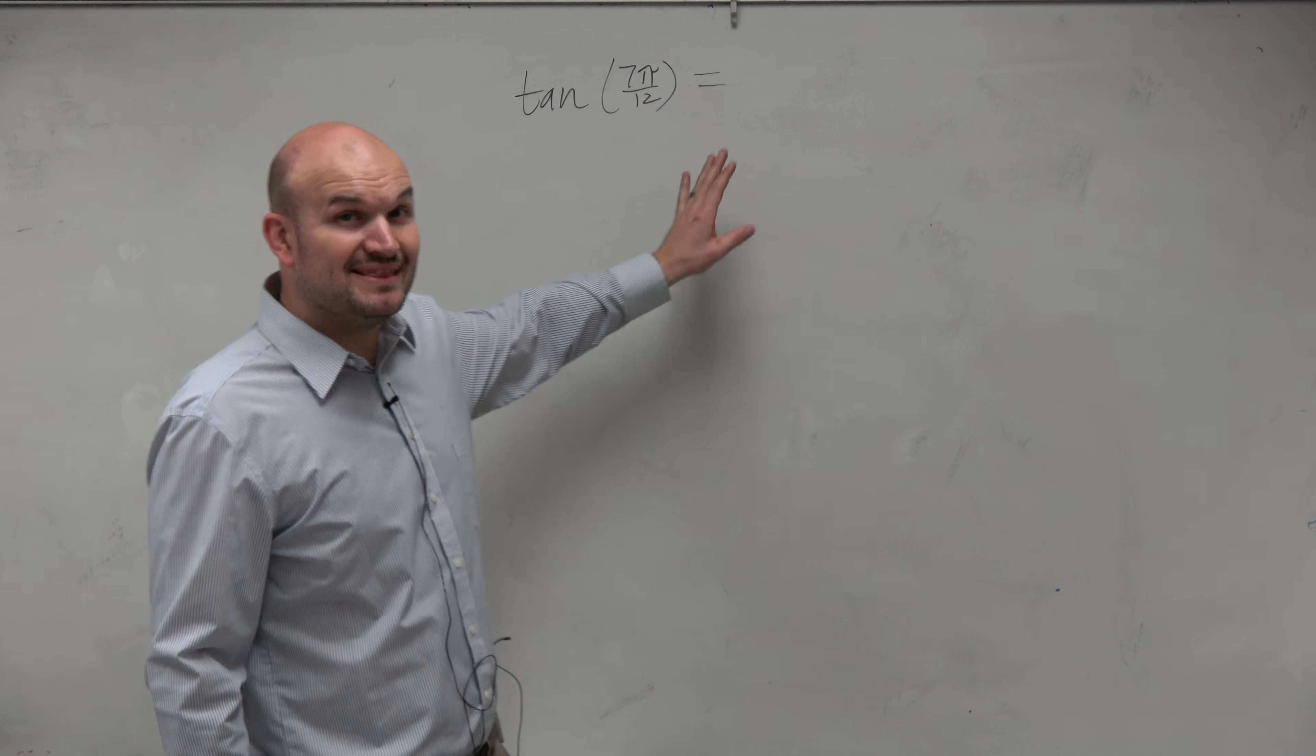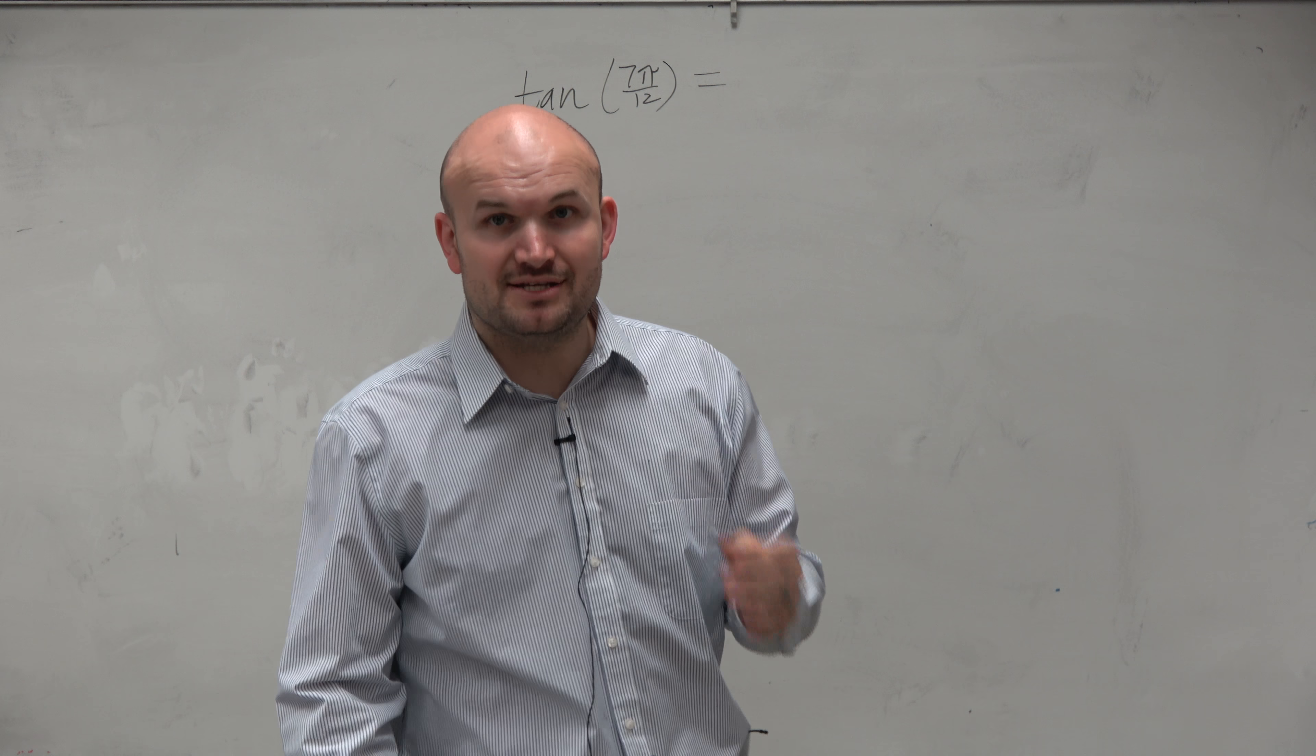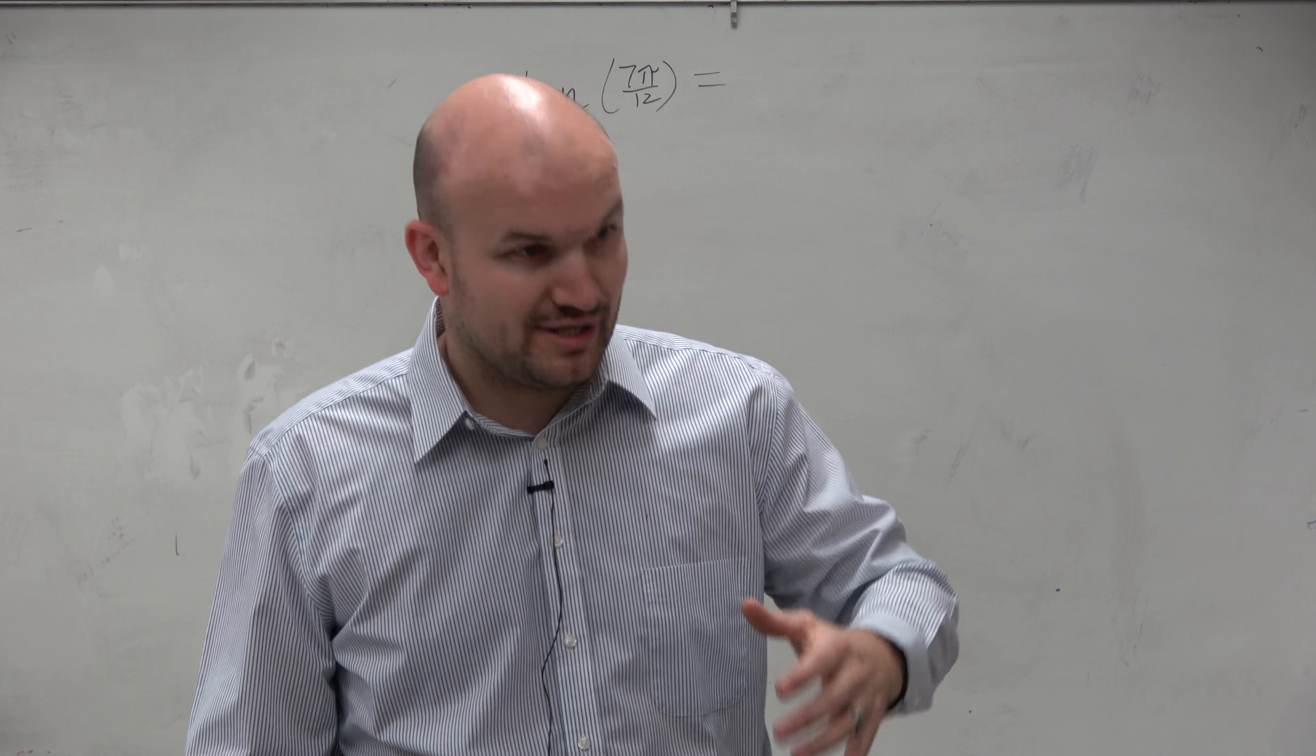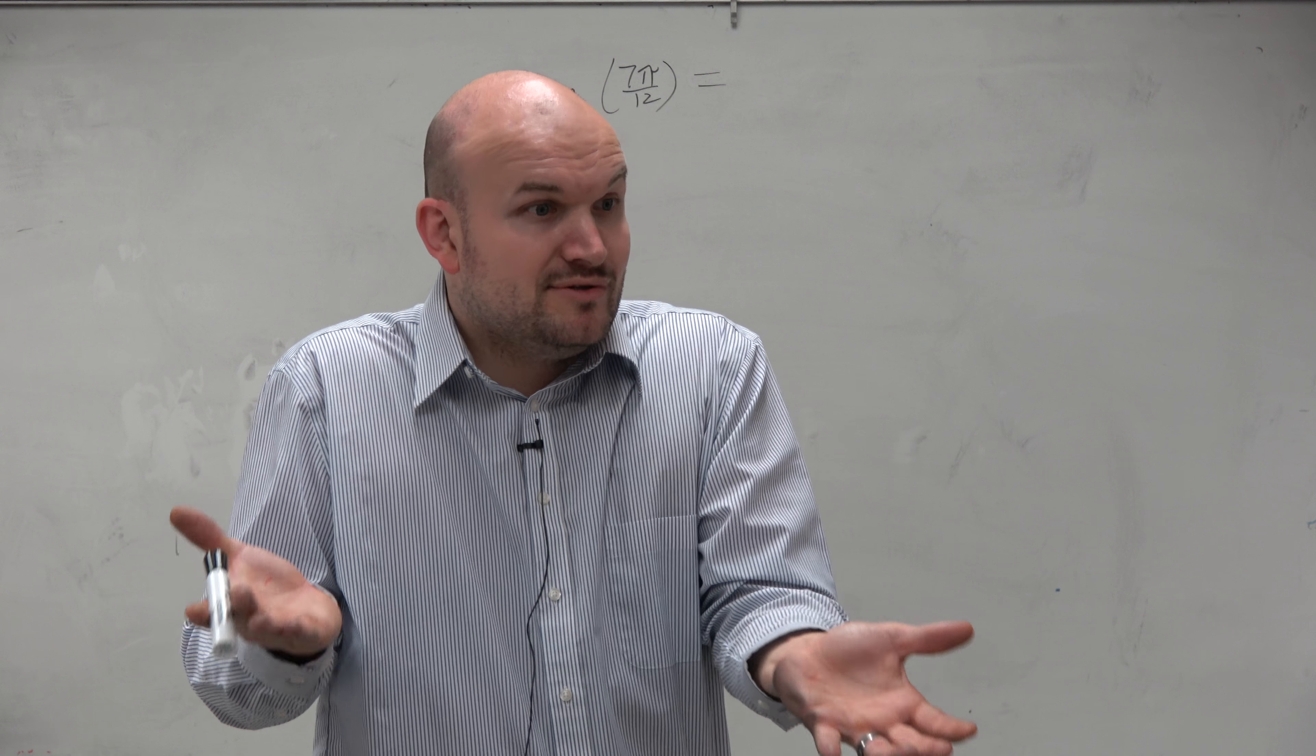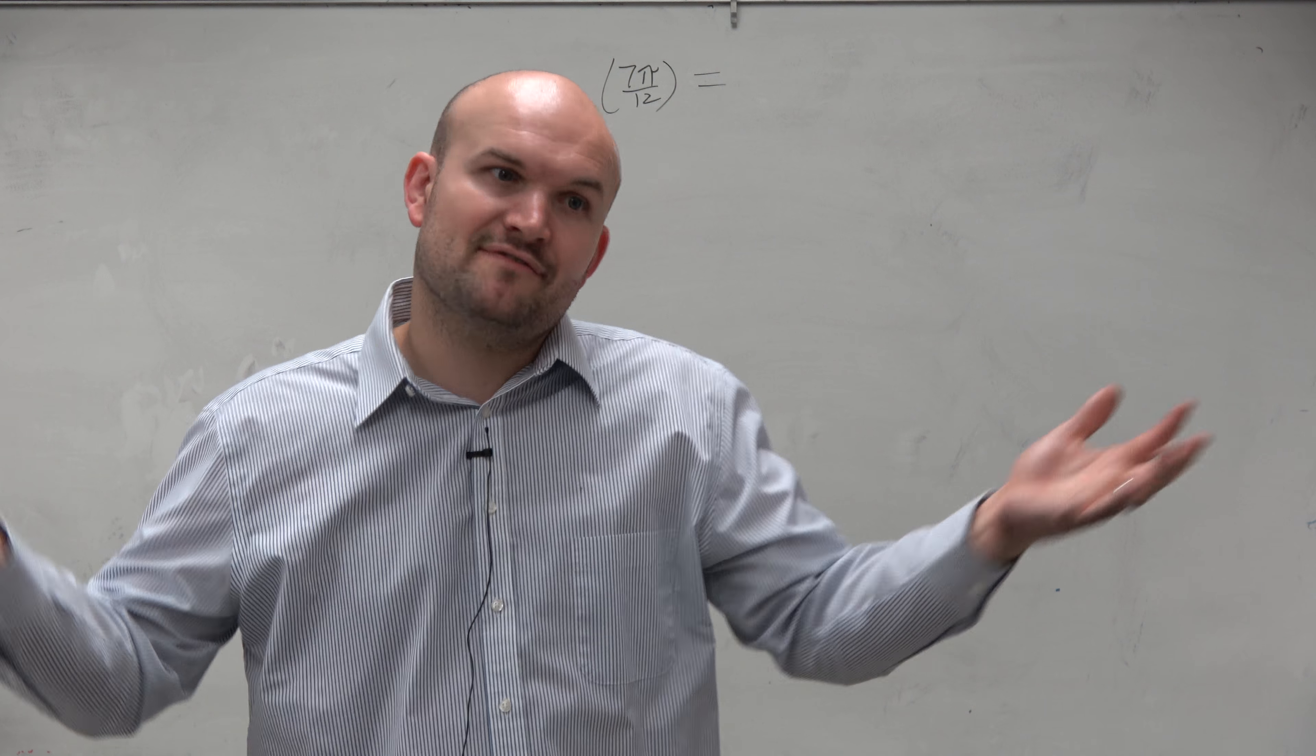So in this one, the same idea is going on, same thing that we're covering. You see tangent of 7π over 12. And again, I'm going to tell you, use half-angle identities. Let's use the half-angle identities.